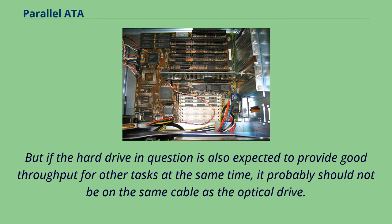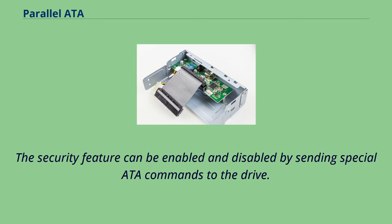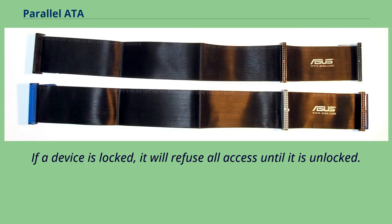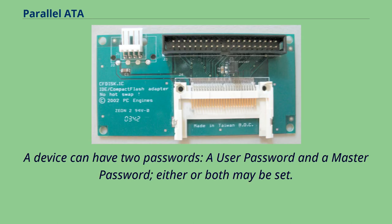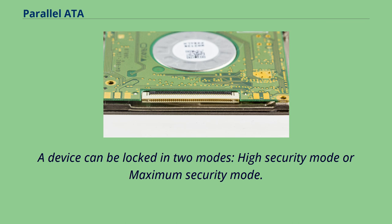ATA devices may support an optional security feature which is defined in the ATA specification and thus not specific to any brand or device. The security feature can be enabled and disabled by sending special ATA commands to the drive. If a device is locked, it will refuse all access until it is unlocked. A device can have two passwords, a user password and a master password, either or both may be set. There is a master password identifier feature which, if supported and used, can identify the current master password. A device can be locked in two modes: high security mode or maximum security mode. Bit 8 in word 128 of the identify response shows which mode the disk is in, where 0 equals high and 1 equals maximum.